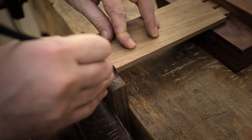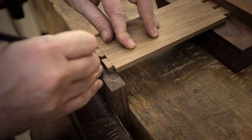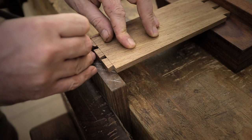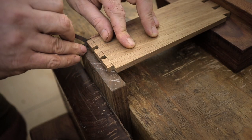With the dovetails completed, it's time to transfer them to the partridge wood. I'm going to make half blind dovetails so that you can't see it from the front.